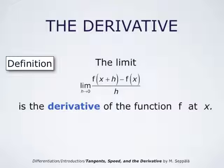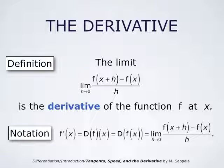This limit as h goes to zero is called the derivative of the function f at the point x. We use the notations f prime at x — that's the first notation for the derivative — or we may also write capital D applied to f applied to x, or capital D applied to f(x). All these notations mean the derivative of the function f at x. There are other notations too; they will be introduced later.